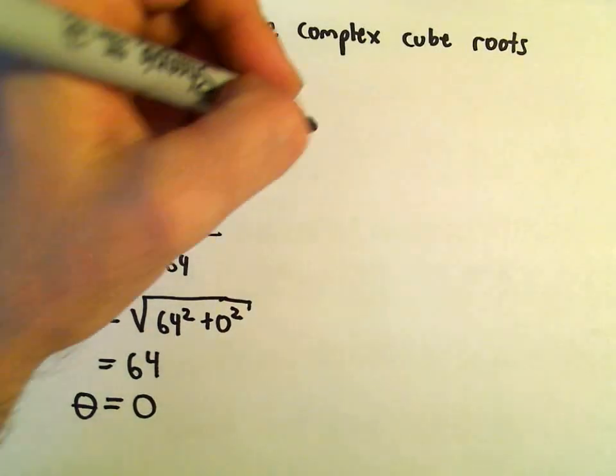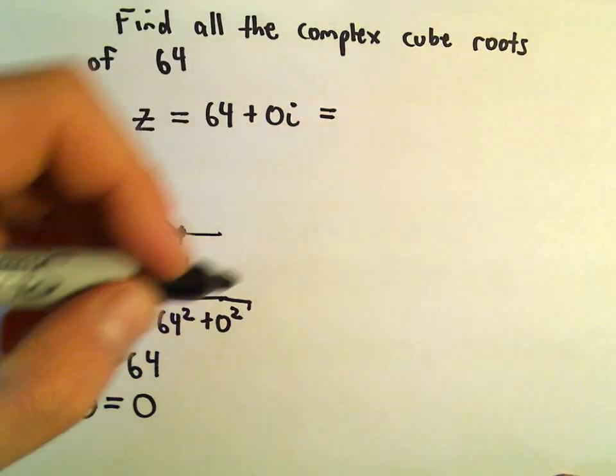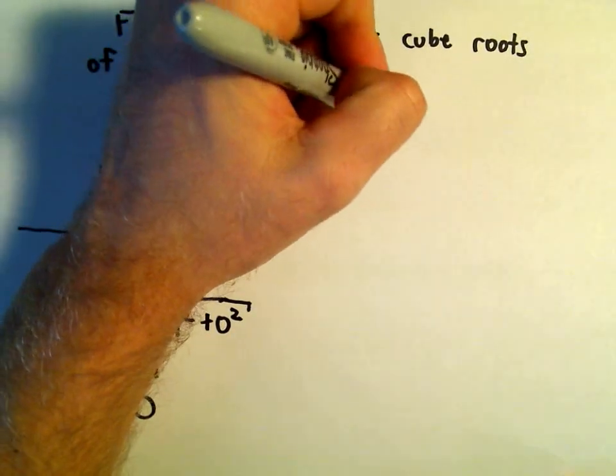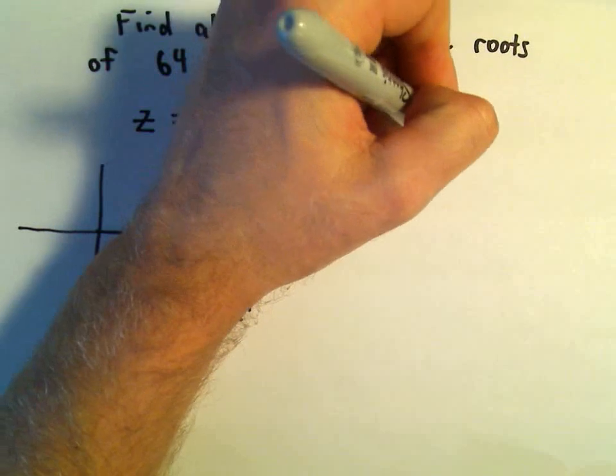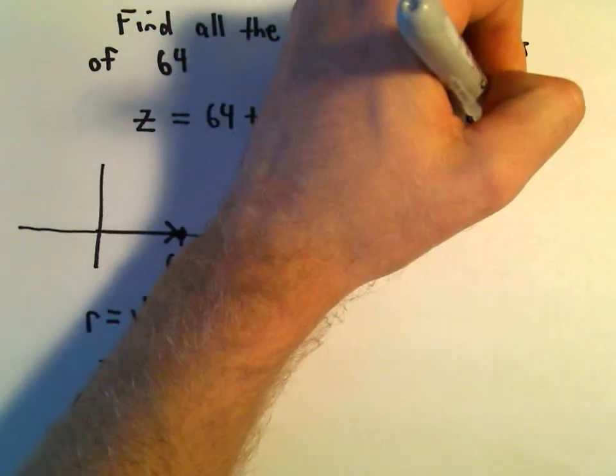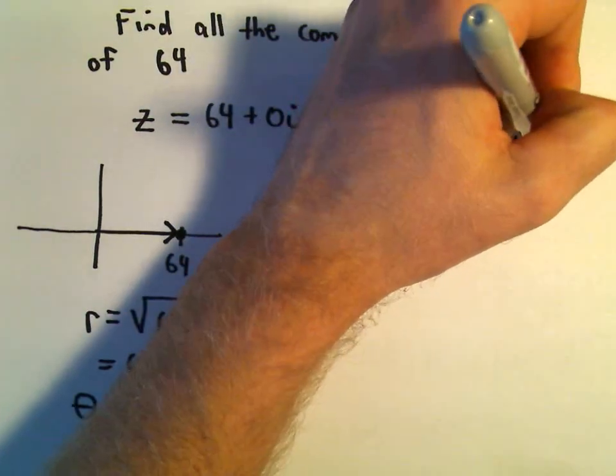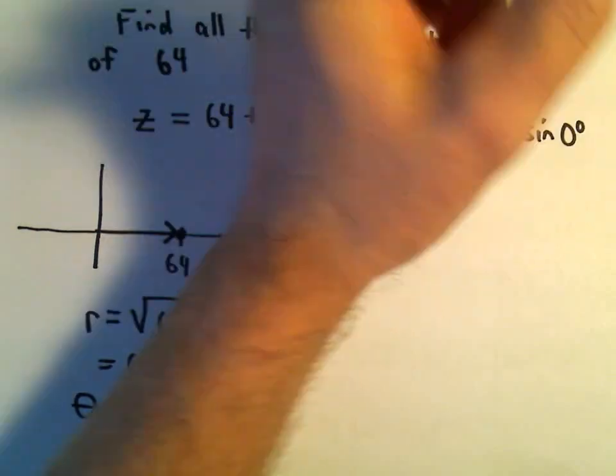I think it's pretty easy to see in this case that our angle theta would just be theta equals 0. So when we rewrite this as a complex number, we can rewrite this as r, which is 64. And then we'll have cosine of 0 degrees plus i sine of 0 degrees.